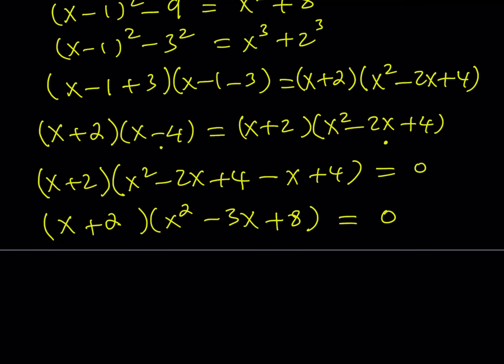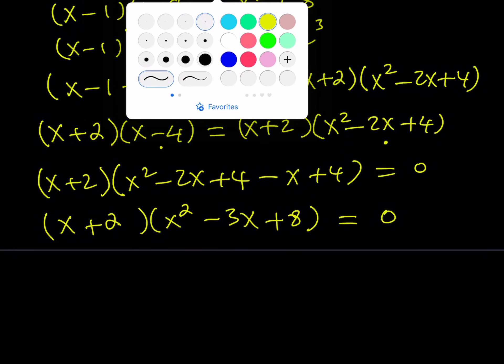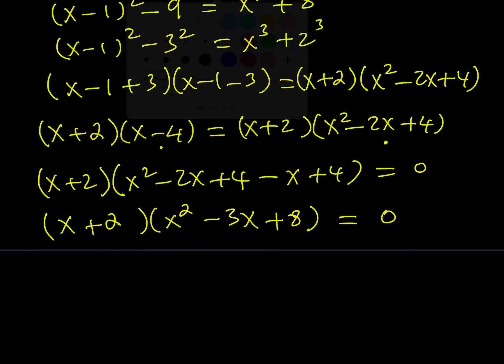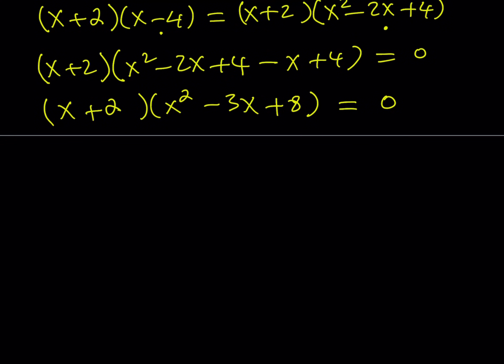So now this equation is easily solvable because it is factored. In the factored form, we can basically set each factor equal to 0. x equals negative 2. One of the roots comes from the linear one.